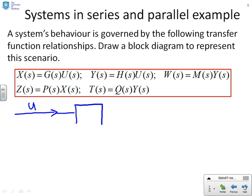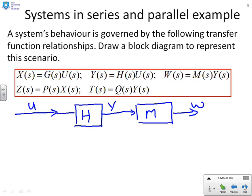And U, I'm going to worry about the Y first. So U goes through H, and that gives me Y. And then what happens to Y? Y goes through M, and that gives me W. Now the other thing you will have noticed is U also goes through G to give me X. So I'm going to put down here G.